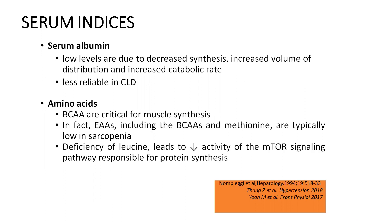Then come various serum indices that can give us an idea of whether the patient is adequately nourished, although they are not perfect. For example, a low serum albumin indicates the patient is not adequately nourished and requires nutritional supplementation as well as physical activity interventions. Similarly, branched-chain amino acids are required for muscle synthesis, so if the patient is lacking them, it may also indicate poor nutritional status.